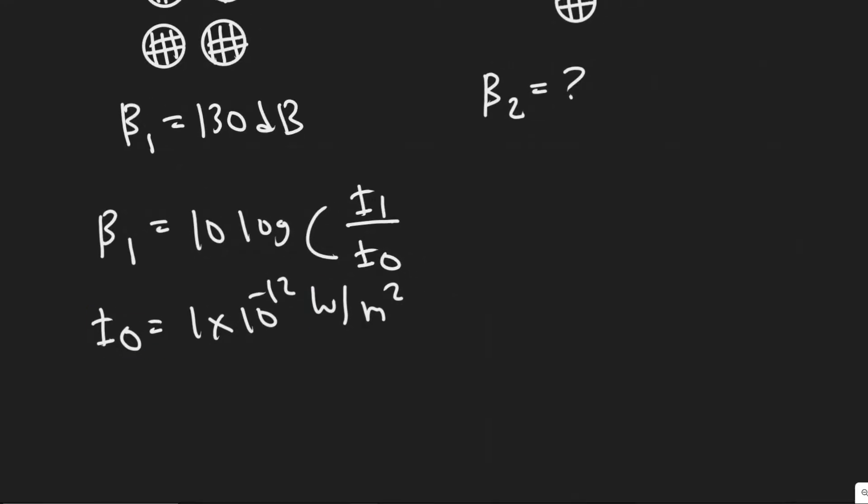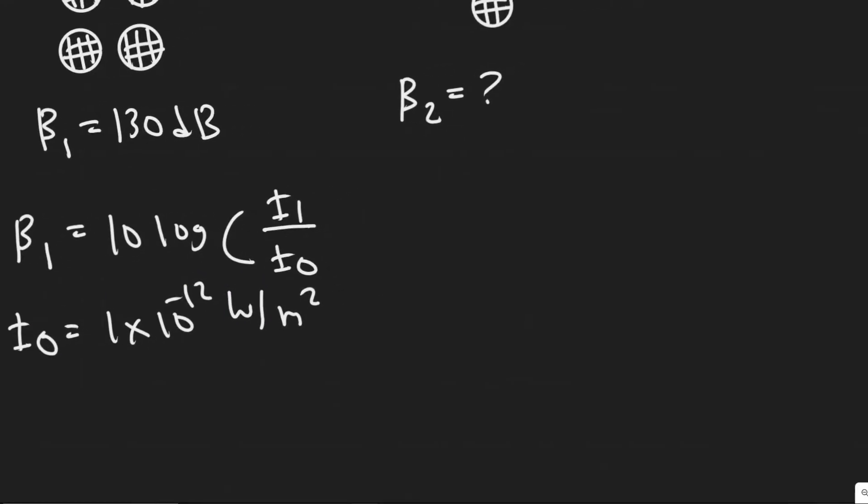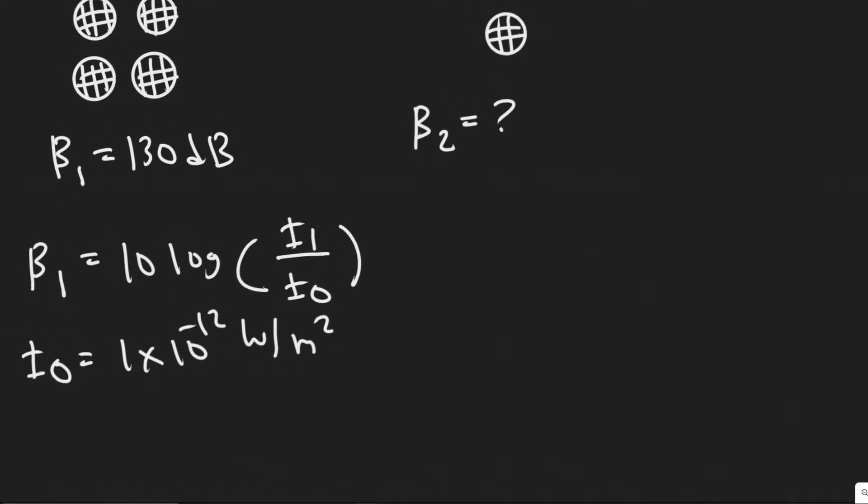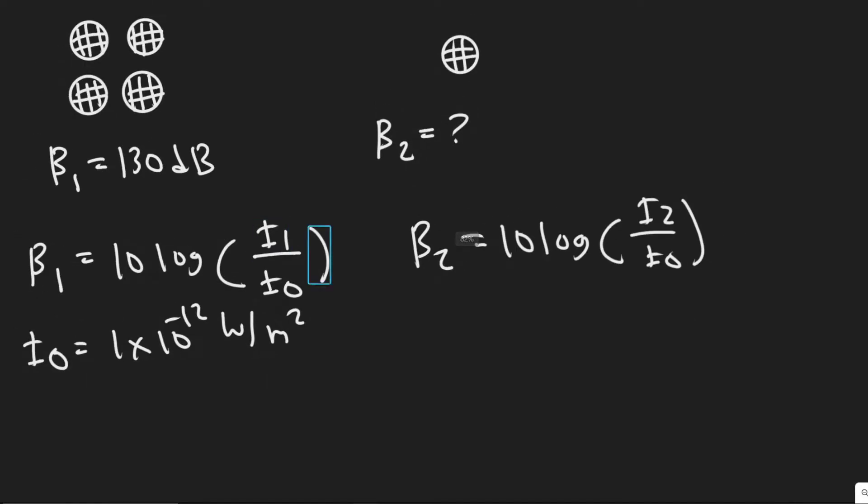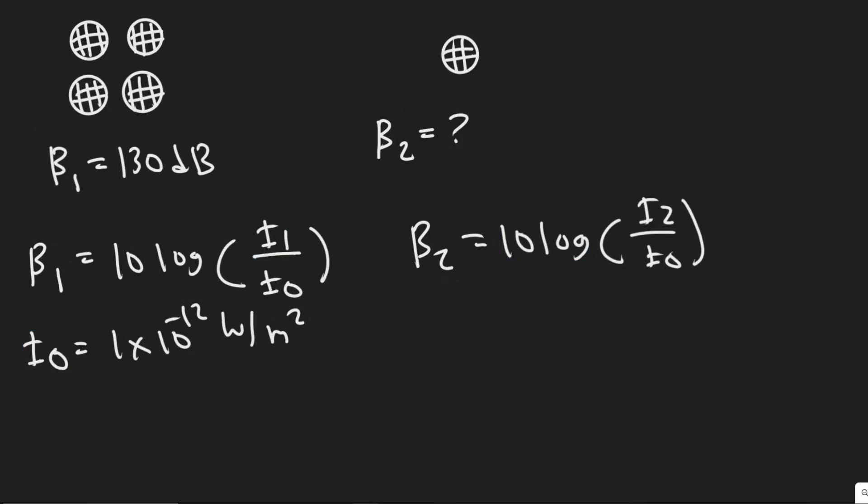This is what that constant is. You don't really need to know it for this problem, but it's just good to know in general. So that's the formula for the sound level of scenario one. For scenario two, β₂, which is what we're trying to find, is 10 log of i₂ over i₀. Notice we don't know the intensity i₁ and i₂, so the way we're going to do this is basically by canceling them or getting them in a ratio and we'll be able to determine the ratio on the information given.